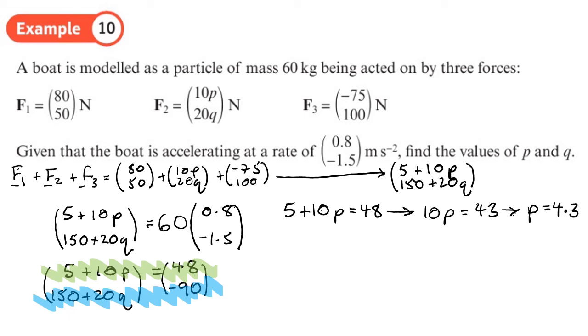And then from the bottom line that's in blue we'll have 150 plus 20q equals negative 90. So that will give us 20q equals negative 90 minus 150, so that will give us negative 240.